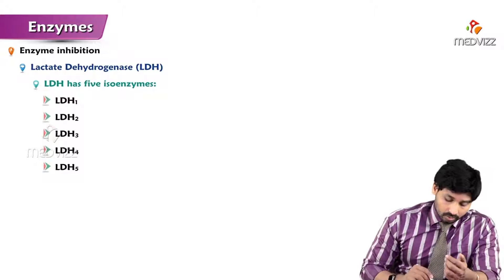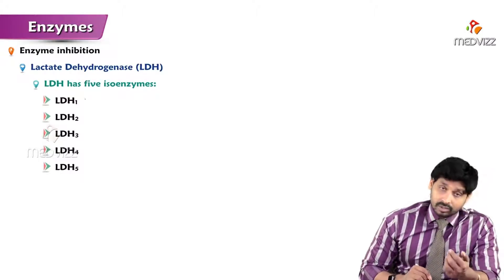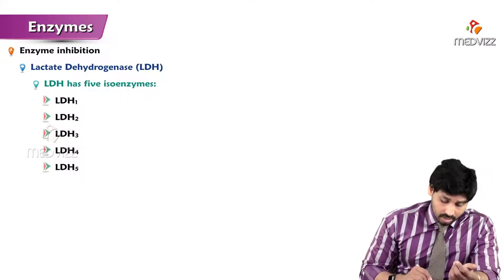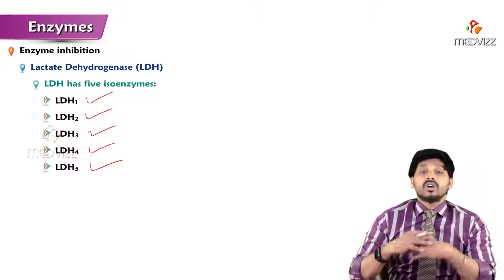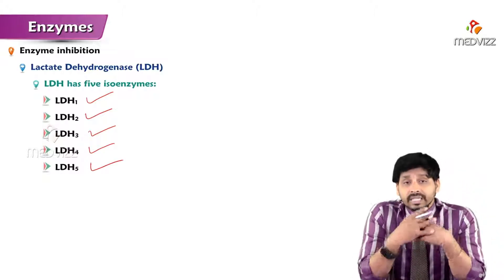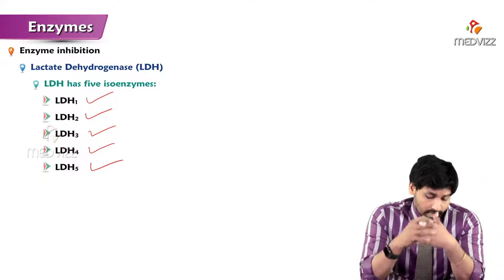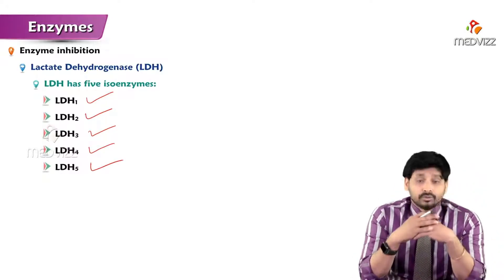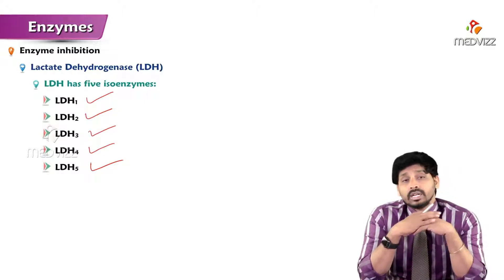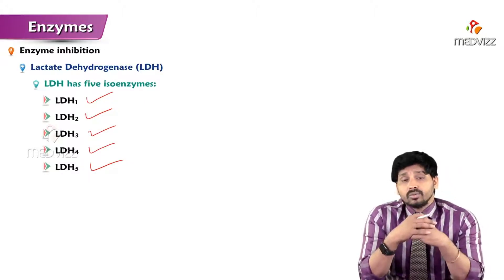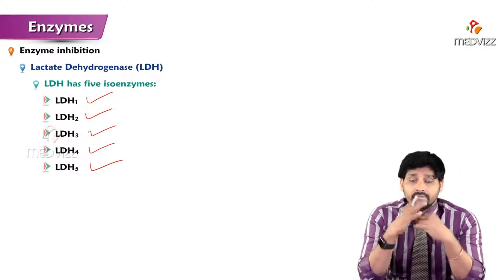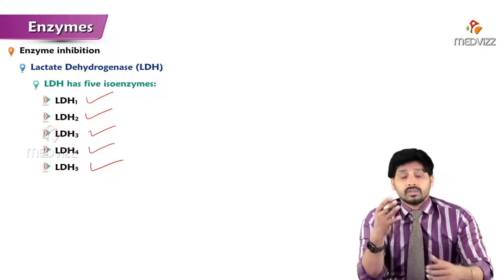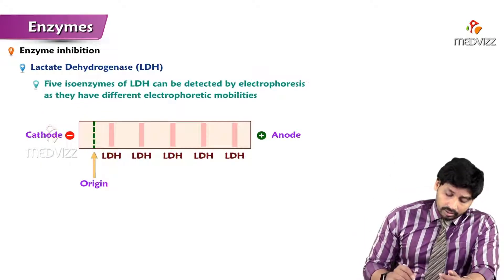Based on location, there are five types: LDH1, LDH2, LDH3, LDH4, and LDH5. To differentiate these isoenzymes, we use electrophoresis. Based on their electrophoretic mobilities, there may be slight structural differences - just as identical twins have different fingerprints despite looking the same - so these isoforms can be separated by the distances they travel in an electric field.